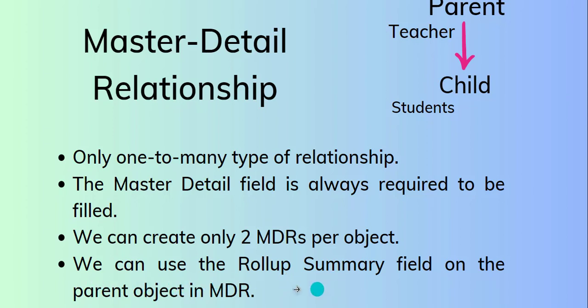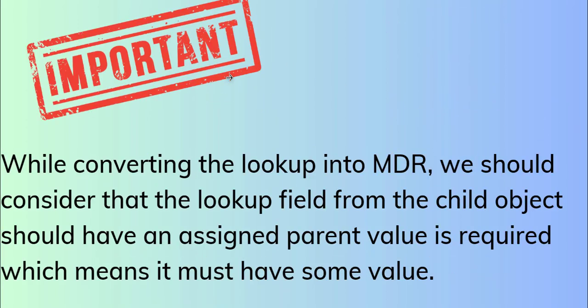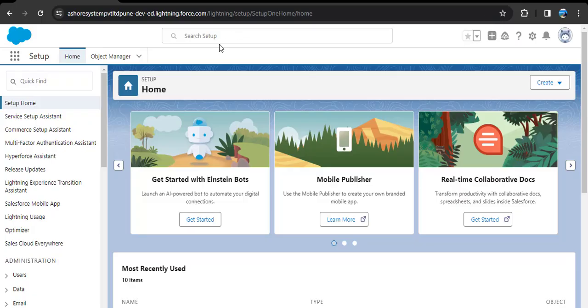We can use the rollup summary field on the parent object in a master detail relationship. Now let's see what should be considered while converting a lookup relationship into master detail. The lookup field from the child object should have an assigned parent value — meaning every child record must already have a value in the lookup field before converting.